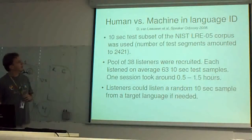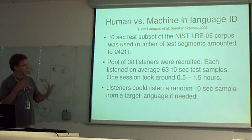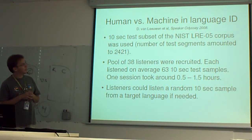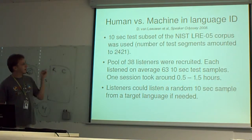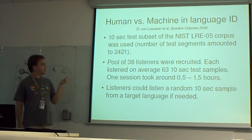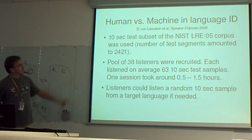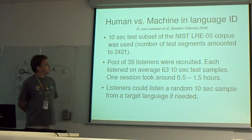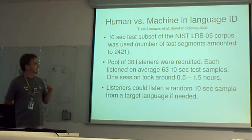In a language ID study at the 2008 Speaker and Language Recognition workshop, they tried to figure out whether humans are better at language identification or machines. They used the NIST LRE 2005 corpus, with a 10-second subset, which turned out to be 2,421 trials. Compared to the previous study there were much fewer trials, and 38 listeners were recruited.